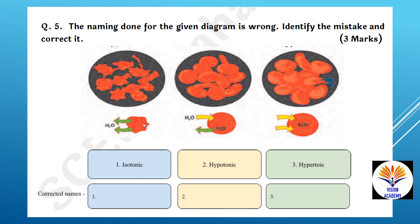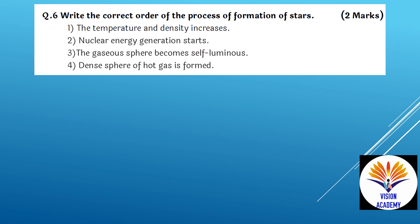The naming done for the given diagram is wrong. Identify the mistakes and correct them. First, isotonic is actually hypertonic. Second, hypotonic is actually isotonic. Third, hypertonic is actually hypotonic.